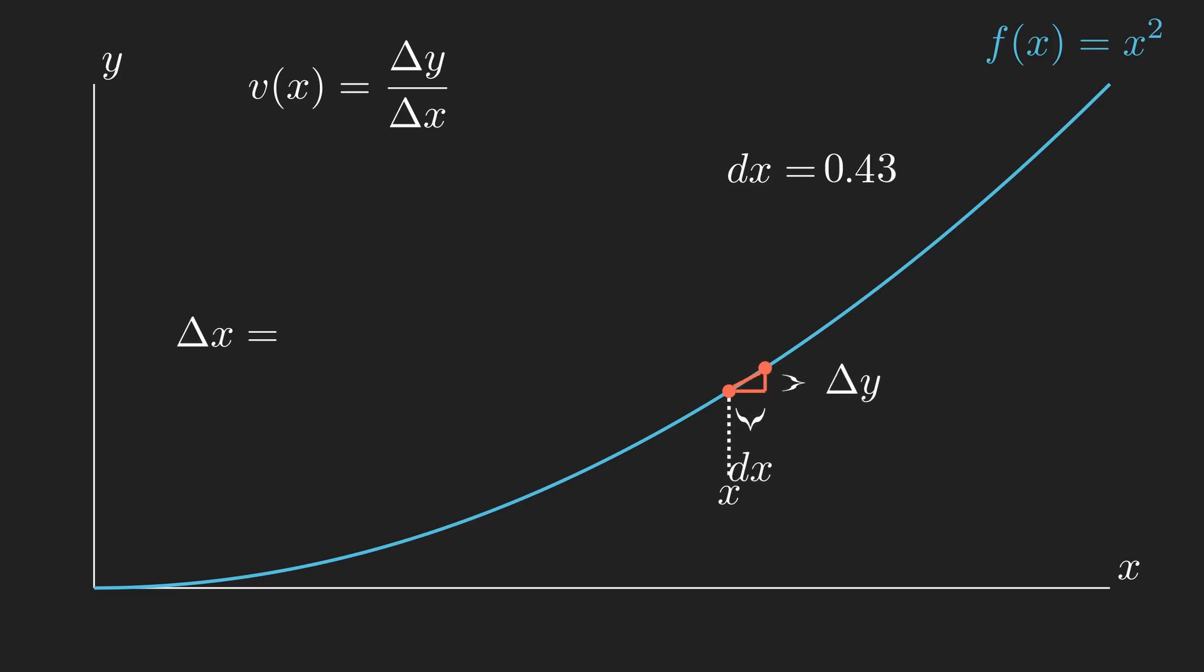The eventual aim is to set dx equal to 0 in order to get an answer to the problem at any given point, instead of an approximation. We can see that our x coordinate is x plus dx, therefore delta x is equal to x plus dx, subtract x, we can simplify this down to just dx.